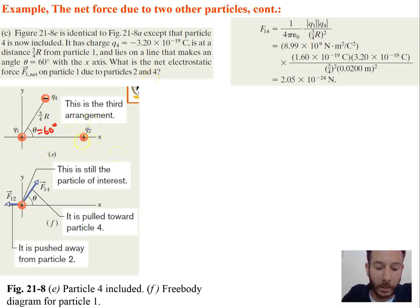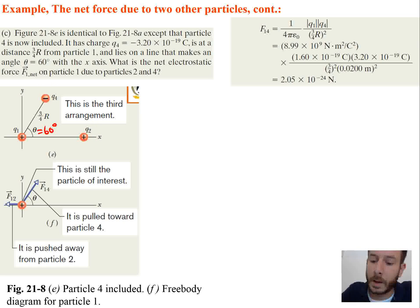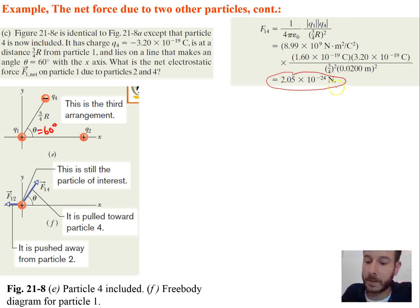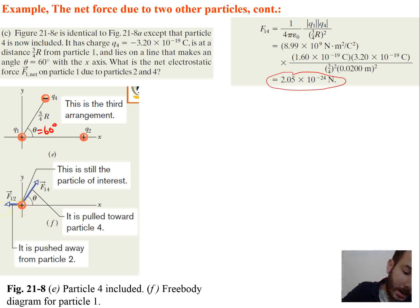We already know what particle 2 contributes — that hasn't changed. To find the force from particle 4, we follow the same steps as before, using Coulomb's law with the absolute values. We end up with 2.05 times 10 to the negative 24 newtons for F14. Looking at the geometry, the direction of F14 is up and to the right, while F12 is straight to the left, so we'd expect the net force to point somewhere up and to the left.